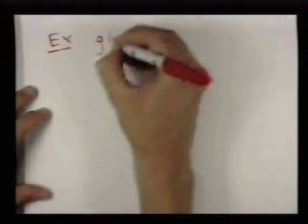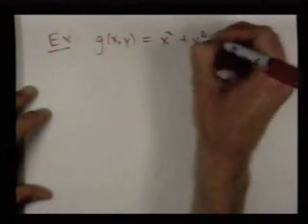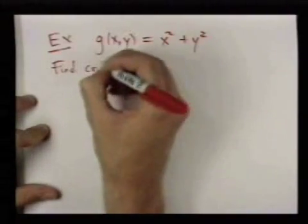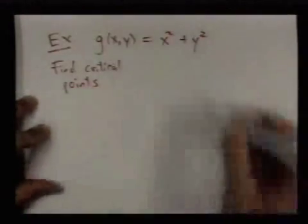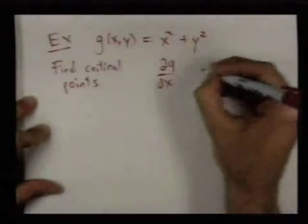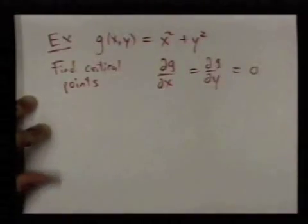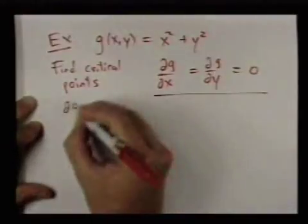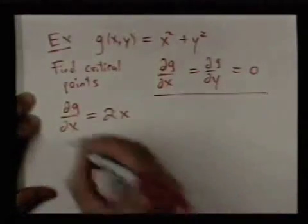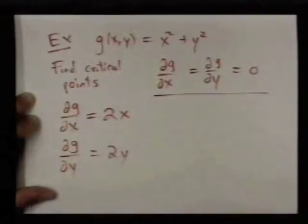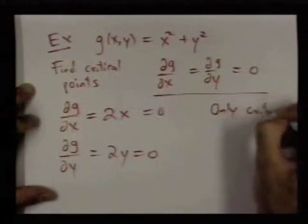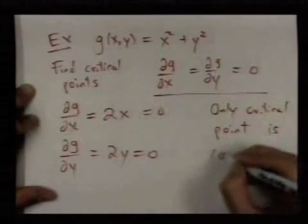Let me do a very simple example to illustrate these ideas. If I have g(x,y) equals x squared plus y squared, let's find the critical points. These are points where both partial derivatives are equal to 0. So we're solving two equations where both are equal to 0. We do these computations. Partial with respect to x is 2x and the partial with respect to y is 2y. For both of these to be 0, it has to be the case that x is 0 and y is 0. So the only critical point is (0,0).